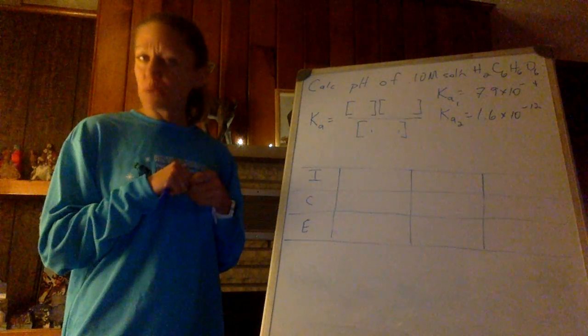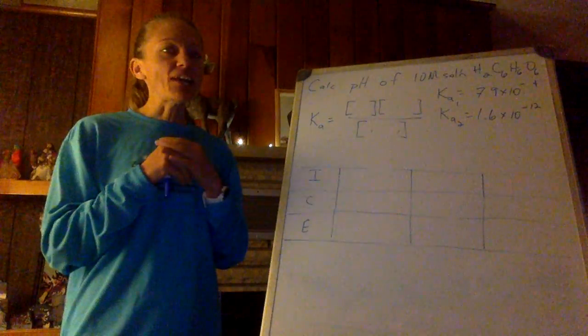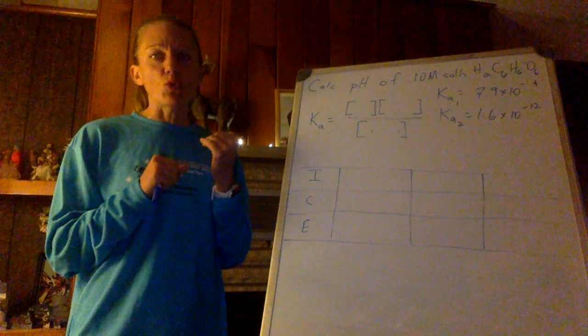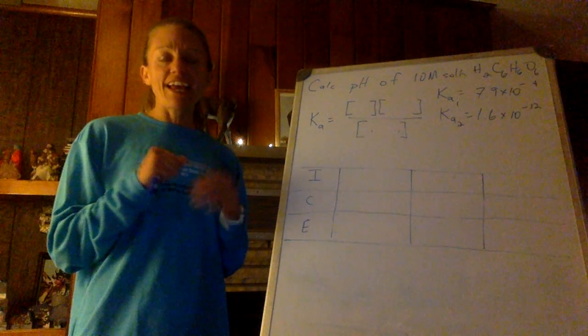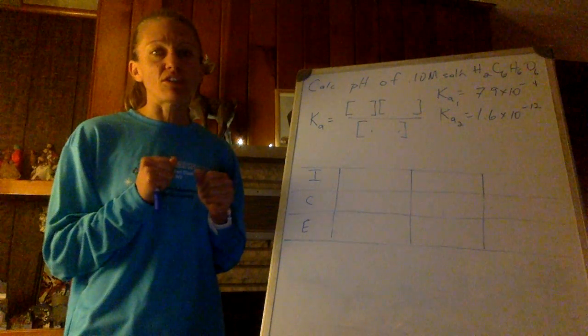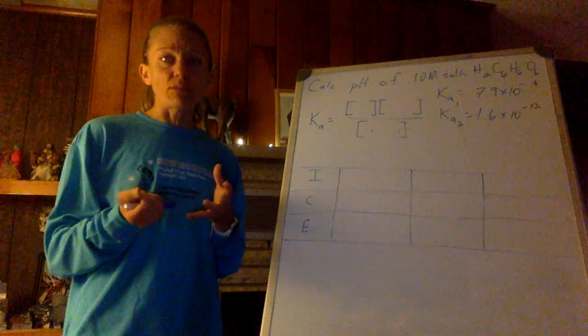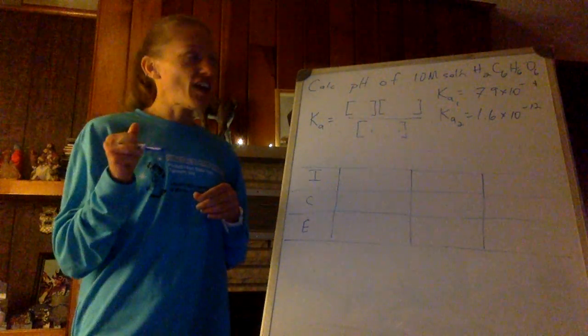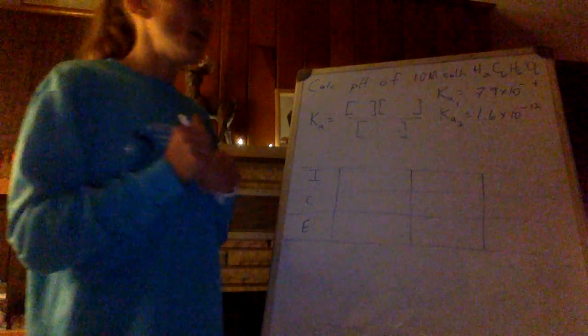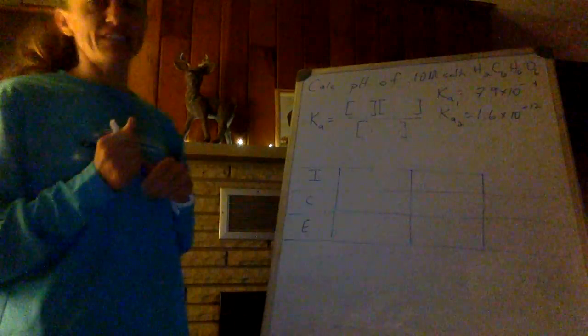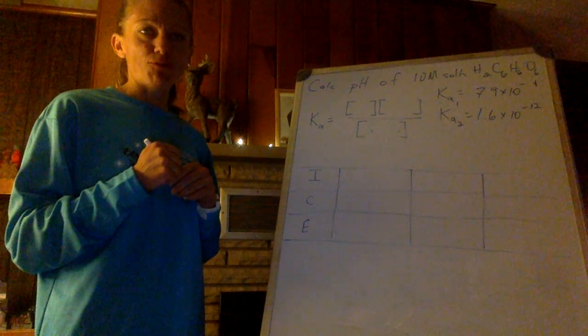When you're calculating the pH for this, ignore the second one if it's much lower than the first. So normally, you're going to see a high Ka and then a low Ka, at least in comparison to each other. So in this example for ascorbic acid, which is vitamin C, first Ka, 7.9 times 10 to the negative 4th. Second one, 1.6 times 10 to the negative 12th. Nah.